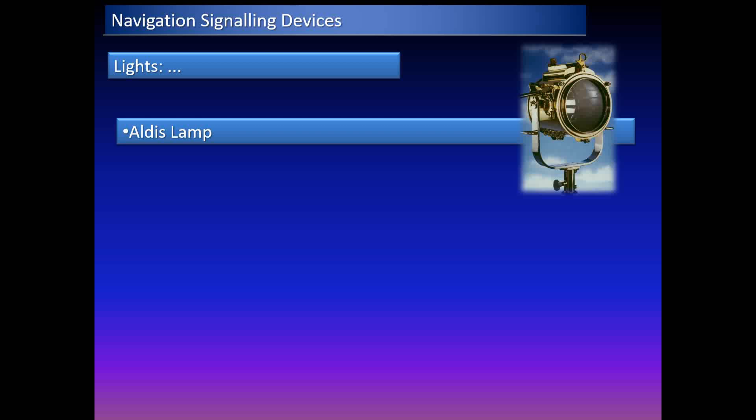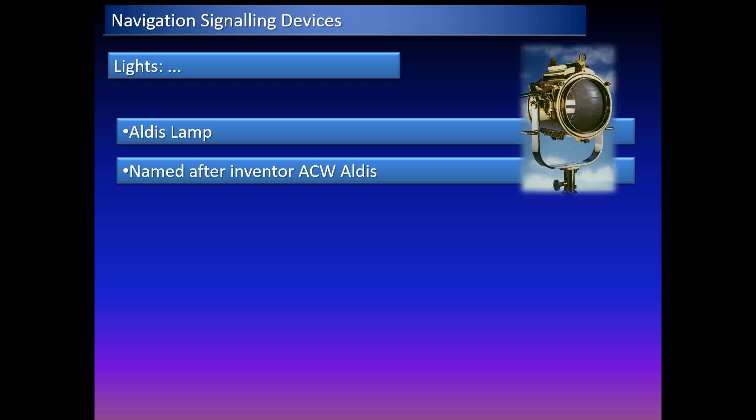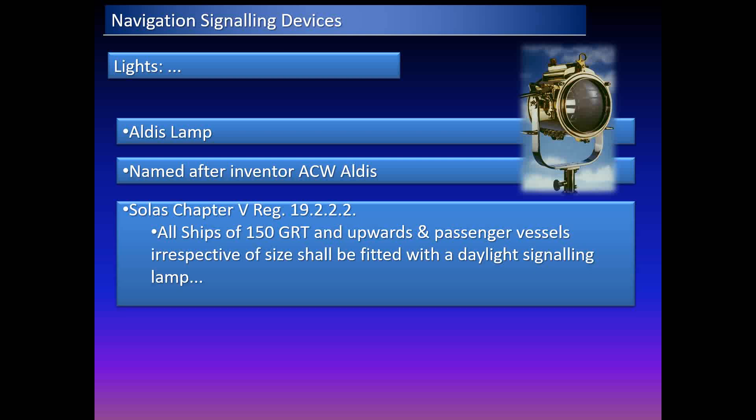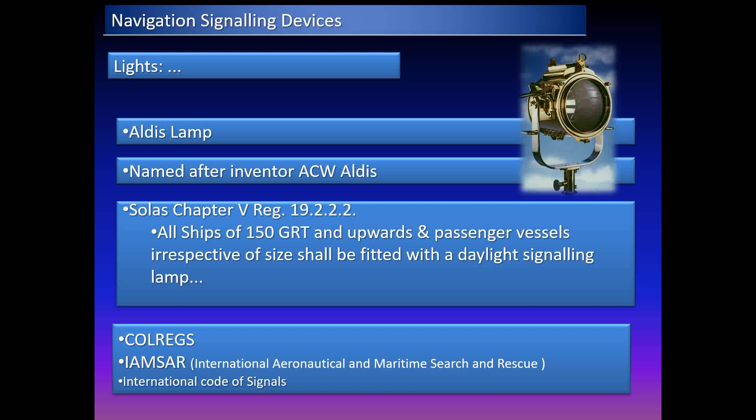The Aldis lamp — or Aldis daylight long-range signaling lamp — is a visual signaling device used primarily for long-range manual signaling. It is mentioned in the collision regulations, the IAMSAR manual, and the international code of signals, and is considered one of the most important lifesaving devices on board. It was named after its inventor A.C.W. Aldis. SOLAS Chapter 5 dictates that all ships of 150 gross tonnage and upwards, and passenger vessels irrespective of size, shall be fitted with a daylight signaling lamp.